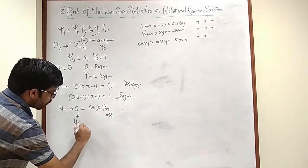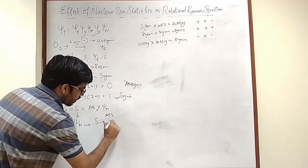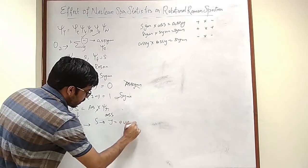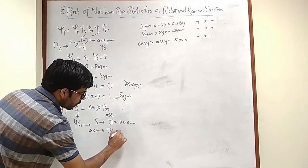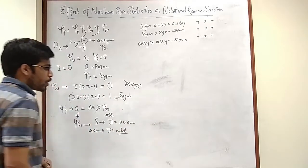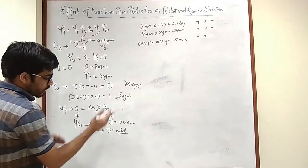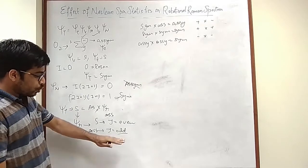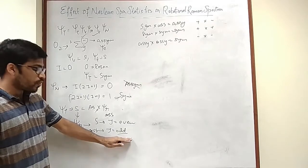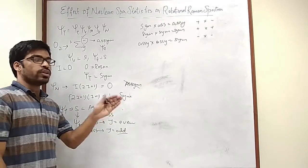Now for symmetric, J can take only even values. For asymmetric, J can take only odd values. What do you mean by even and odd values? That the transitions, the peaks that you are going to see in the spectrum will correspond to only those transitions which arise from J equal to odd energy levels like 1, 3, 5, 7.